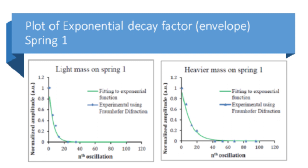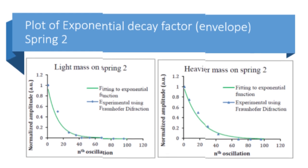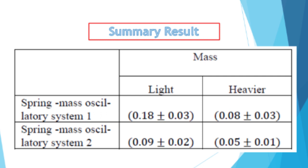These two graphs show the light and heavier mass oscillating on the second spring with water as the absorber medium. Again, the heavier mass shows a lower exponential decay than the lighter mass. However, across two different springs, the spring with a larger spring constant produces a larger exponential decay constant, indicating that the oscillation takes longer to vanish. The systematic error in my work was evaluated by simple error analysis.